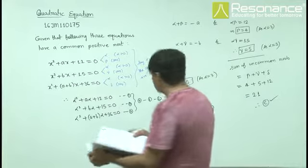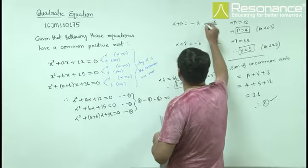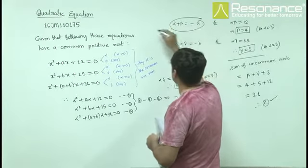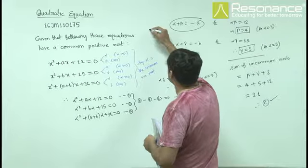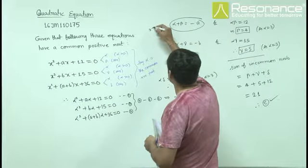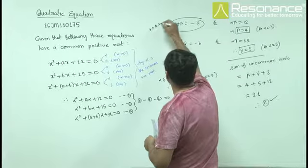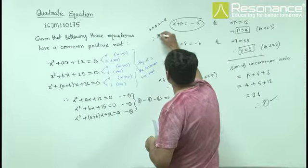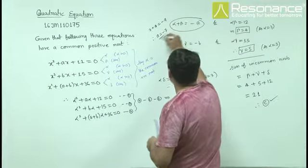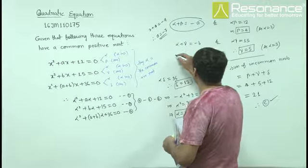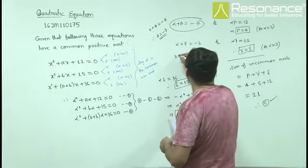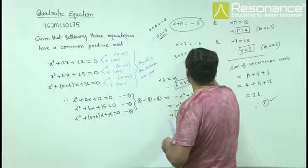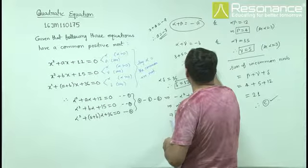Now for options a and d, we can find a and b. Since α = 3 and β = 4, and sum of roots is -a, we get a = -7. Similarly, α = 3 and γ = 5 give us -b, so b = -8.